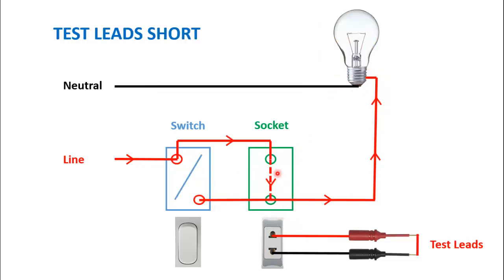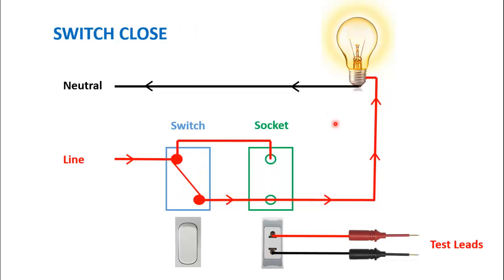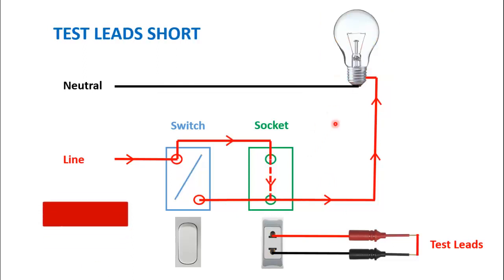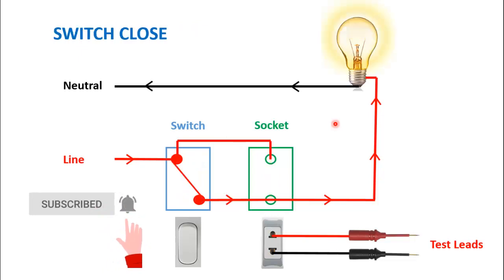We will see the animation when the test leads are shorted with each other. So what happens? Now the circuit is completed through the socket into the bulb and through the neutral. Now as soon as the test leads are shorted with each other, our bulb will light up. So this is a very simple wiring diagram of a series test lead.